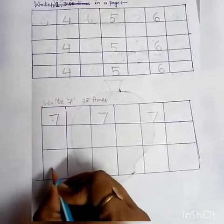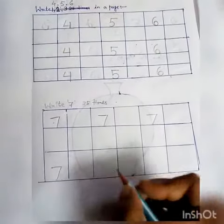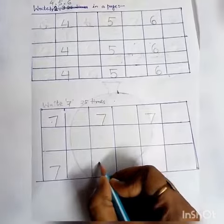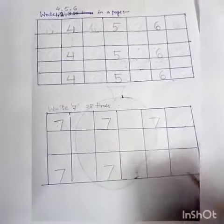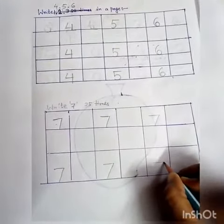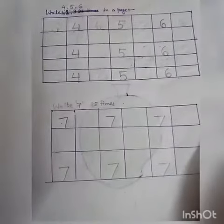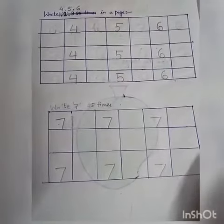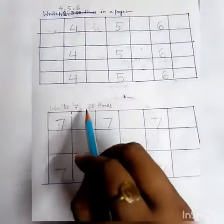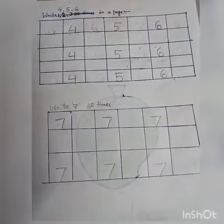7. Sleeping line, slanting line. Sleeping line, slanting line. Sleeping line, slanting line. Children, you will write 7 twenty-five times. 25 times. Okay? Do it.